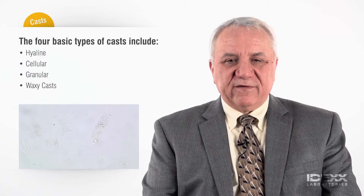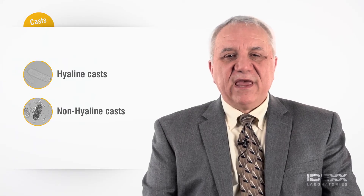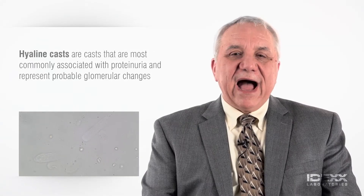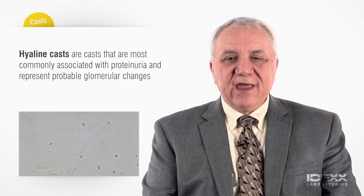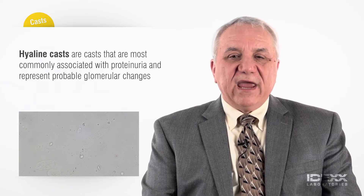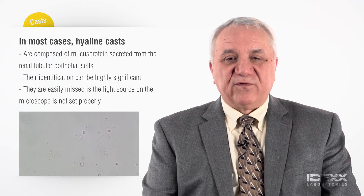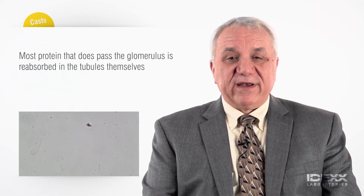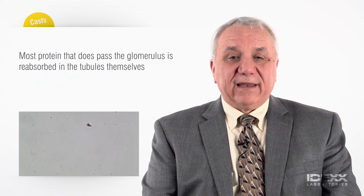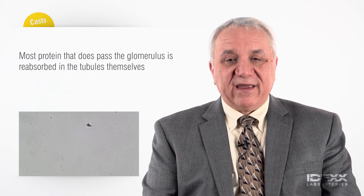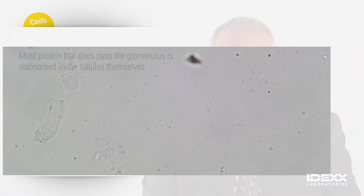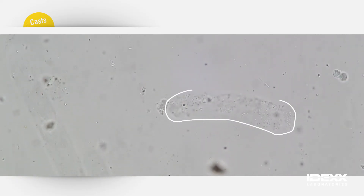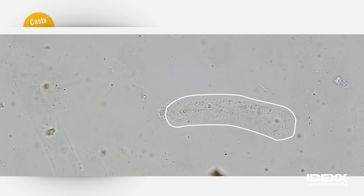From a diagnostic perspective, characterizing casts into two basic categories — hyaline and non-hyaline casts — is all that is needed in most situations. Hyaline casts may be seen with simple dehydration in the otherwise clinically normal animal. In most cases, they are composed mostly of Tamm-Horsfall mucoprotein secreted from the renal tubular epithelial cells. Hyaline casts may also be seen with protein-losing glomerulopathy; therefore, their identification can be highly significant. Hyaline casts are the most difficult casts to identify because the refractive index of the cast itself is so similar to the surrounding urine fluid, and if the light source on the microscope is not set properly, they are easily missed.